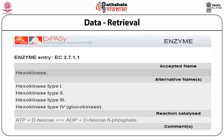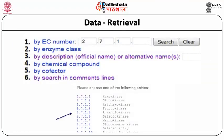The reaction catalyzed shows that the phosphate group is transferred from ATP to D-hexose, yielding ADP and D-hexose-6-phosphate. Alternatively, if we want to see the complete list of all the enzymes in class 2.7.1, do not enter the last digit. Enter the first three digits and click the search button. Once you click the search button, the complete list appears in the browser window, listing all the enzymes which are in this class.